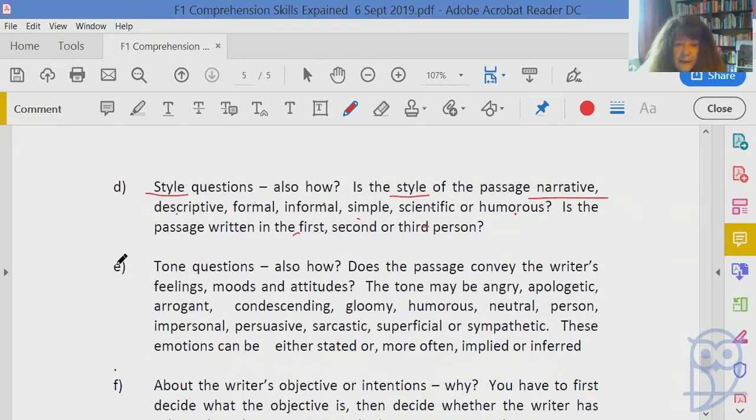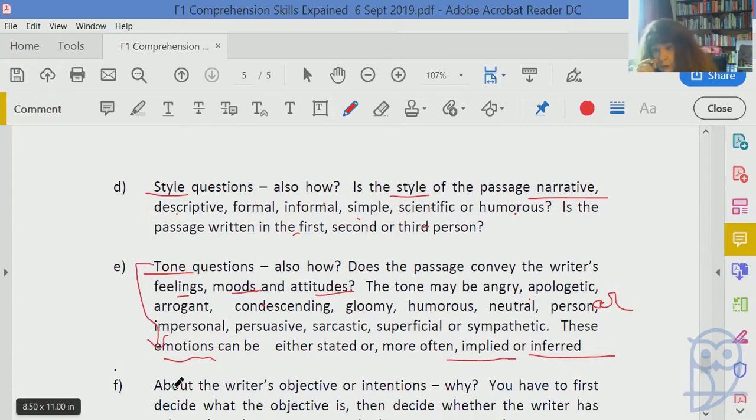Now the tone of the passage. Does the passage convey the writer's feelings, moods, and attitudes? The tone could be angry, apologetic, arrogant, condescending, gloomy, humorous, neutral, personal, impersonal, persuasive, sarcastic, superficial, or sympathetic. These emotions can be stated but generally they're implied or inferred by how the writer is describing things. So you've got to be the detective and work out the tone, which is really about emotions.